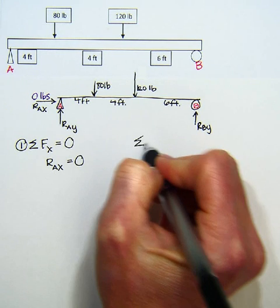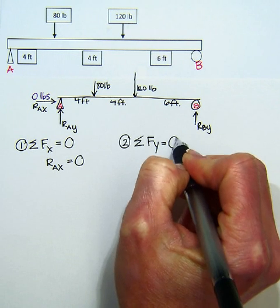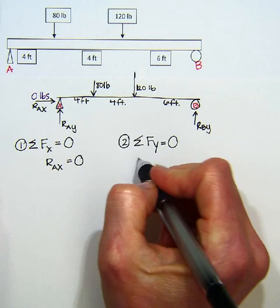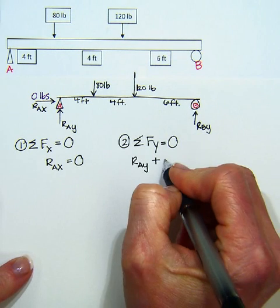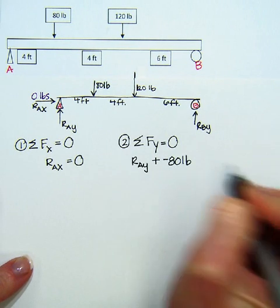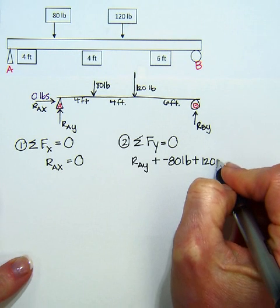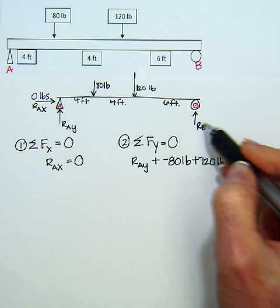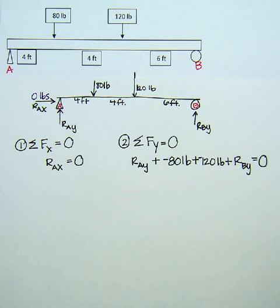Our second step is to say the sum of the forces in the y direction have to be equal to 0. And so I'm going to look at things that are acting in the y direction. So I see RAY is acting up. Plus I have 80 pounds and it's in a downward direction. So I'm going to say negative 80. Plus I have 120 and it's acting in a downward direction. So I'm going to say negative. Plus RBY is also in the y direction. All of those have to be equal to 0.